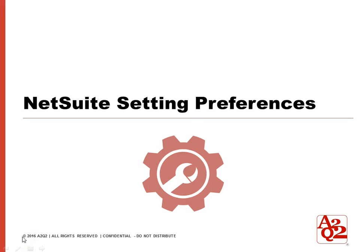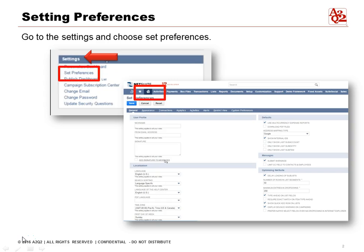Let's look at setting preferences for NetSuite. This is one way to help us be more efficient in using NetSuite. From the home page you will see Settings. Settings allow us to personalize our dashboard or set preferences. It's also where we can update our security questions or change our email and password.